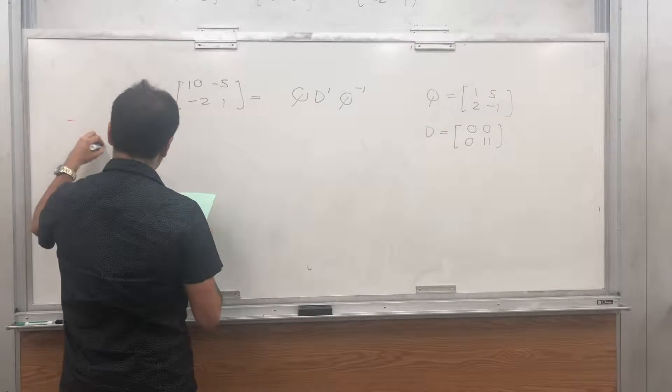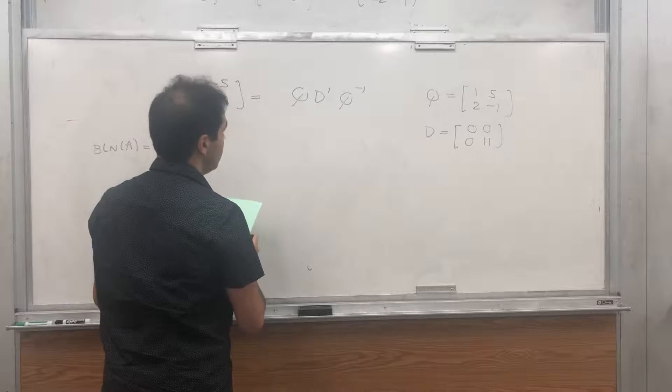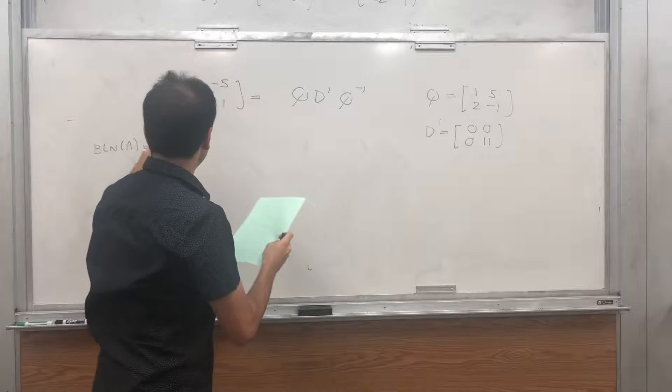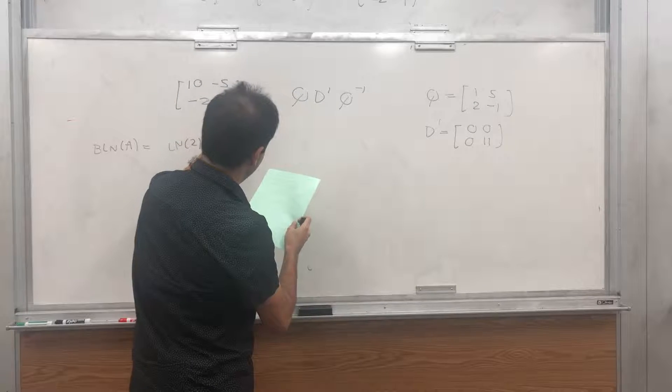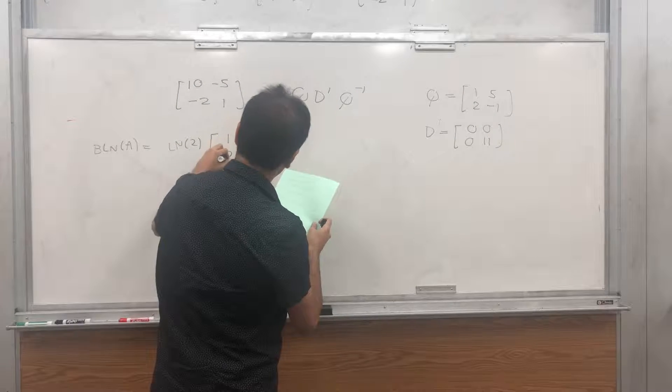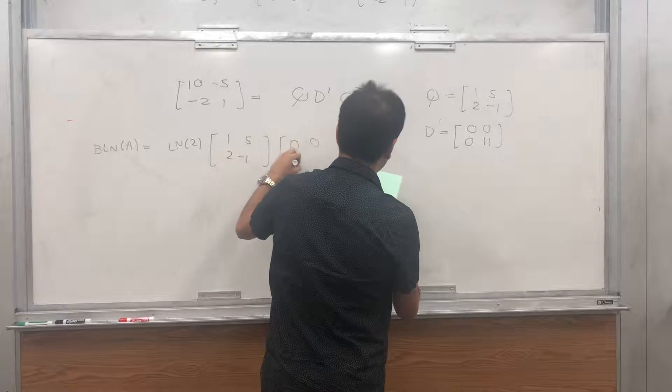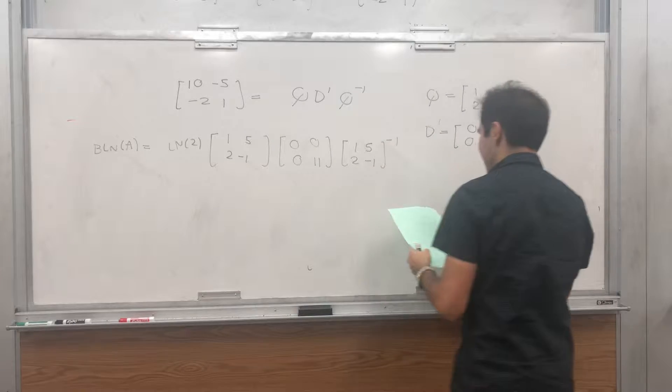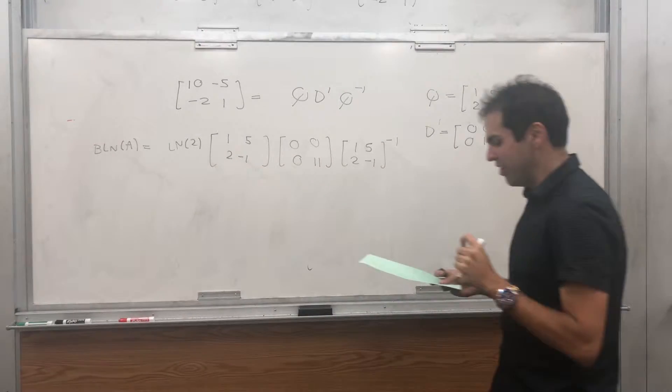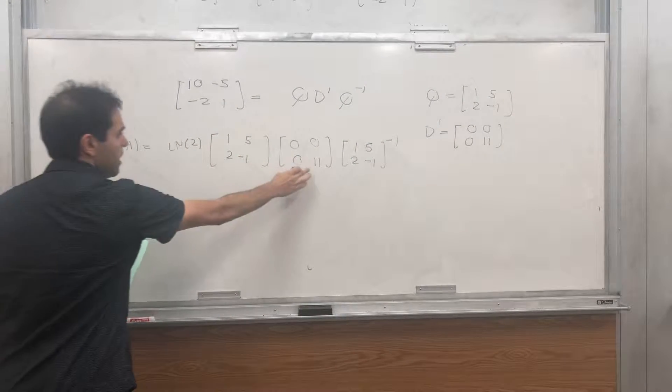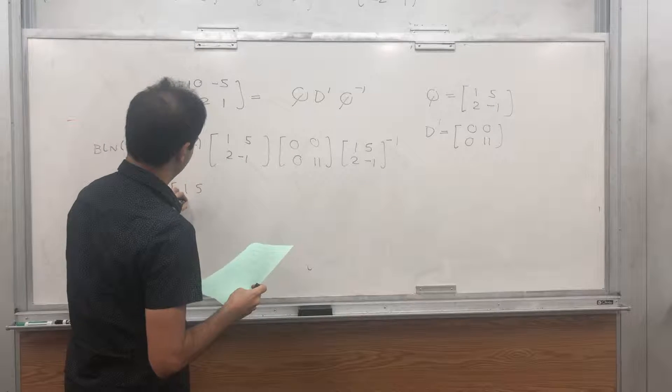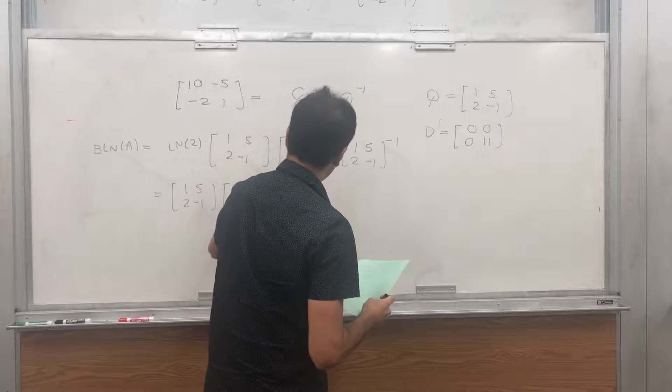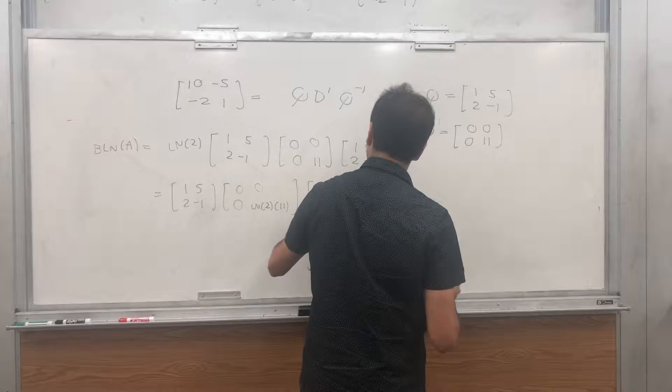And, what this tells us is that, actually, B ln of A, is then equal to just this matrix, so Q, D prime, Q inverse, times, remember, that constant ln of 2. So, ln of 2, of 11, 1, 5, 2, minus 1, 0, 0, 0, 11, and 1, 5, 2, minus 1, inverse, and beware, it gets quite messy. Okay, so, then, this ln of 2, you can put it here, so, 1, 5, 2, minus 1, 0, 0, 0, ln of 2, times 11, and then the inverse, 1, 5, 2, minus 1, inverse.